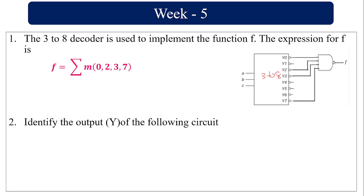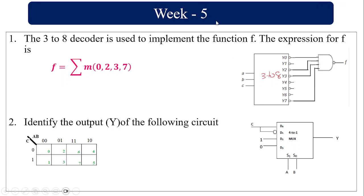Identify the output Y of the following circuit. So they have given a 4×1 MUX. Here A and B are going to be the selector lines and C is going to be the input. I am going to use a 3-variable K-map. Since A and B are the selector lines: if A,B = 0,0 then D0 will be selected; if 0,1 then D1 will be selected; if 1,0 then D2 will be selected; and if 1,1 then D3 will be selected.